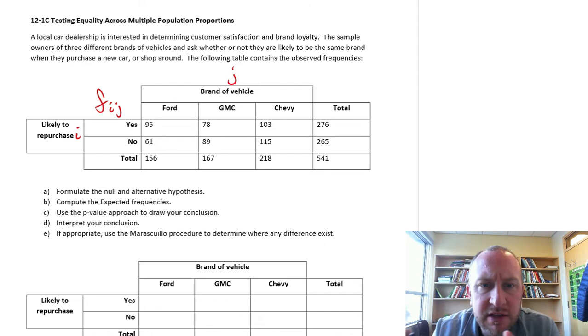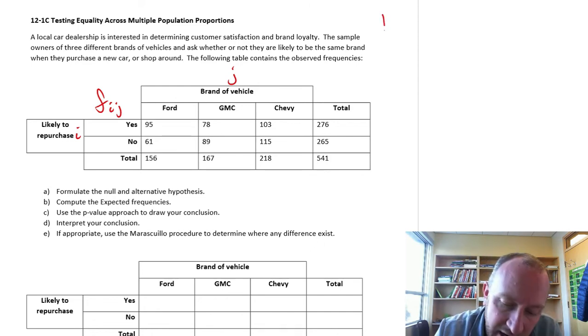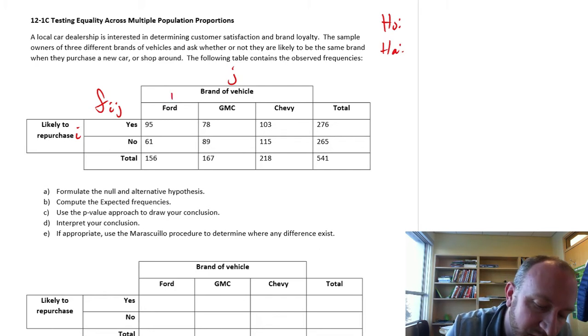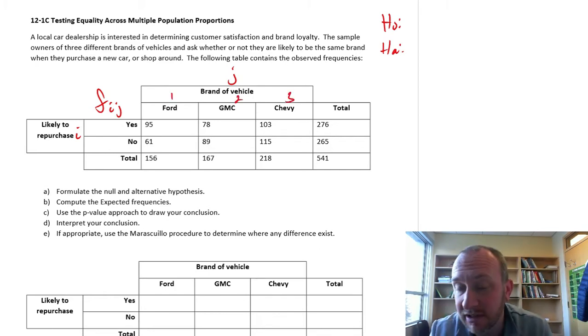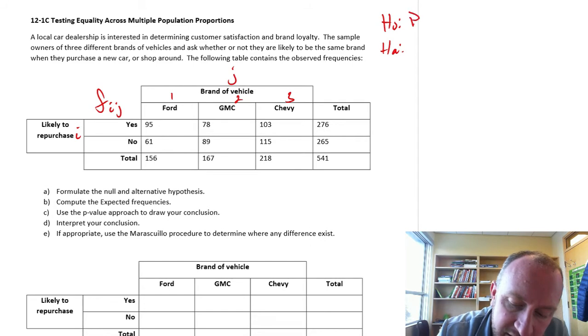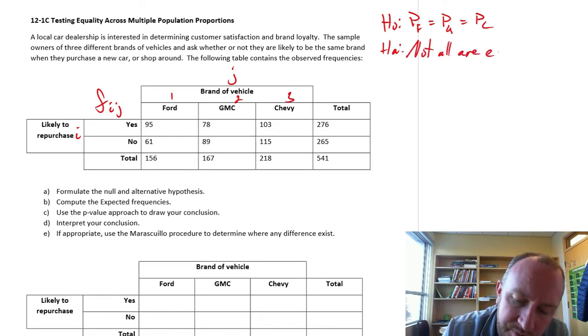So we need to formulate our test. We have null and alternative hypotheses. We have one, two, three different populations that we're comparing. Our null states that the proportion of Ford owners who would repurchase is the same as GMC, is the same as Chevy. The alternative is simply not all are equal.